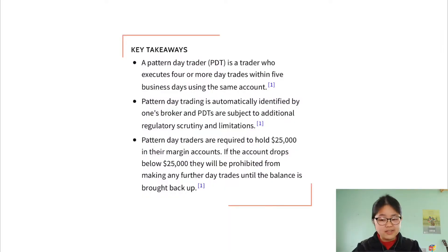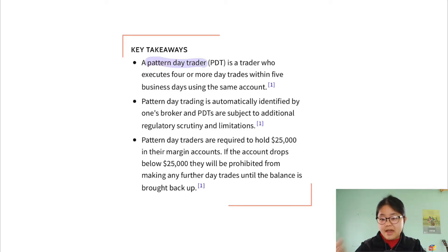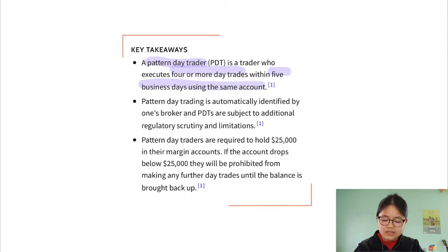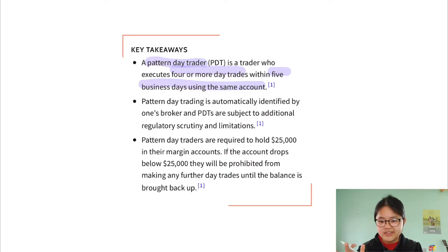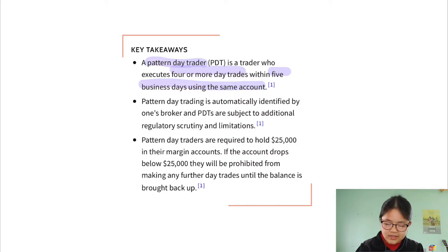Now onto what the PDT rule actually is. PDT stands for Pattern Day Trader, and a Pattern Day Trader is someone who executes four or more day trades within five business days using the same account. The definition itself isn't the annoying part. The annoying part is that if you fall under this guideline, you are subject to additional regulatory scrutiny and limitations.